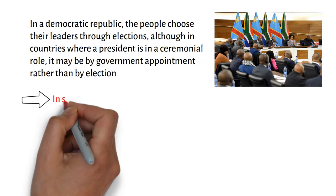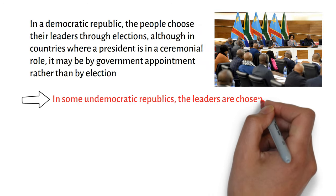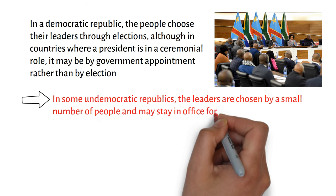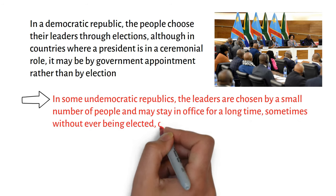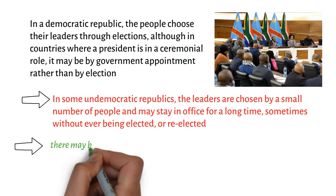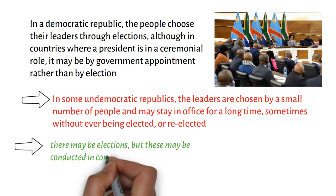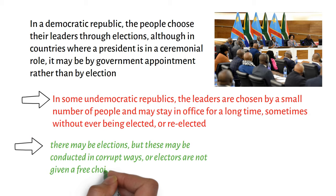In some undemocratic republics, the leaders are chosen by a small number of people and may stay in office for a long time, sometimes without ever being elected or re-elected. In some cases, there may be elections, but these may be conducted in corrupt ways, or electors are not given a free choice of who to vote for.